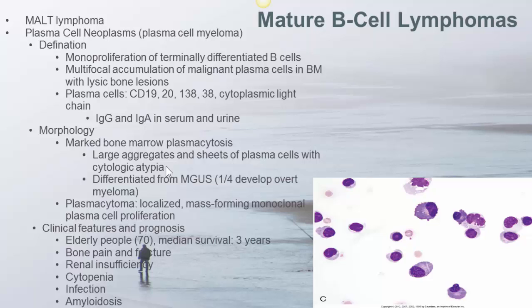The image here shows plasma cells in the pleural fluid of a patient with plasma cell myeloma or multiple myeloma. Plasma cell myeloma affects elderly people with a median diagnosed age of 70 years old; median survival time is 3 years.